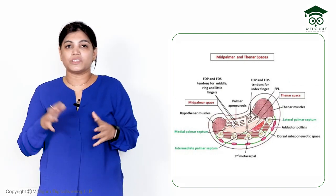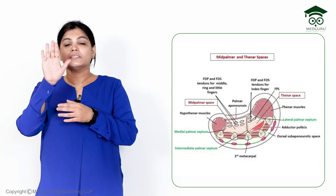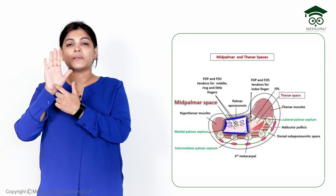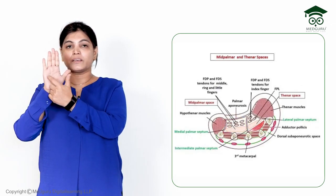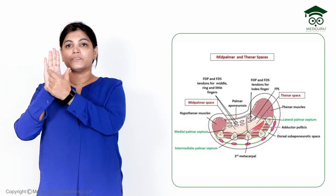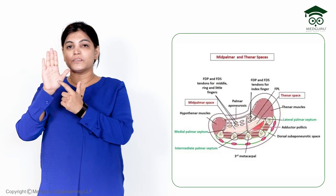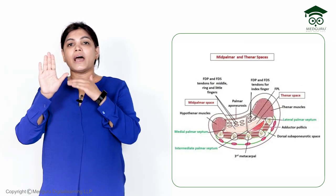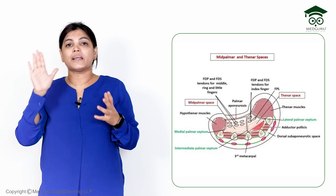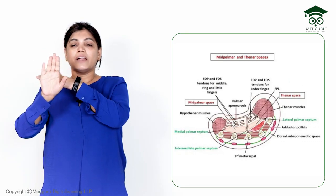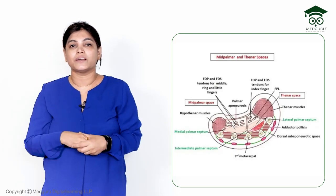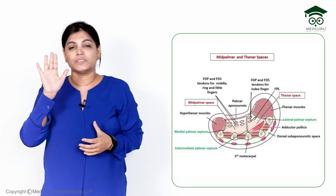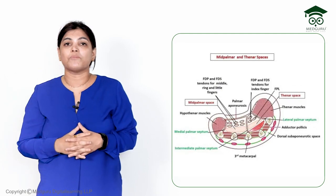Before discussing each space, I would like to give a general idea of where these spaces are located. This is the hand — this is the lateral aspect and this is the medial aspect. The mid palmar space is located on this medial aspect. I can best explain the spaces using a transverse section, but on the surface I can also give you a two-dimensional idea of these spaces.